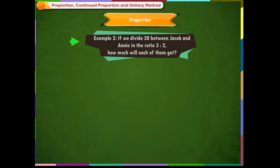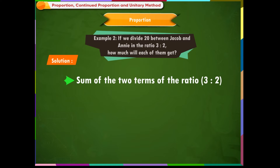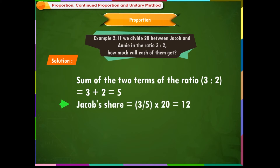Example 2: If we divide 20 between Jacob and Annie in the ratio 3:2, how much will each get? Solution: Sum of the two terms of the ratio 3:2 is 3 + 2 = 5. Jacob's share = (3/5) × 20 = 12. Annie's share = (2/5) × 20 = 8.